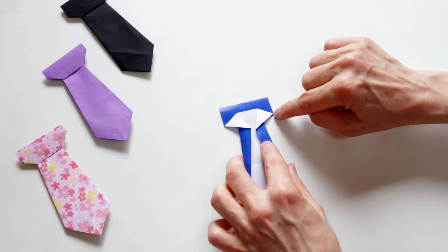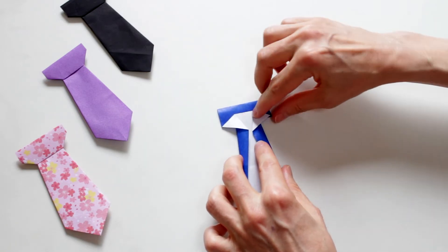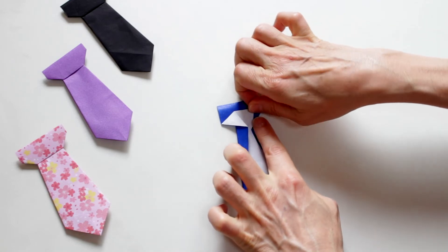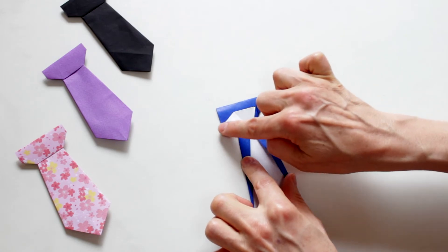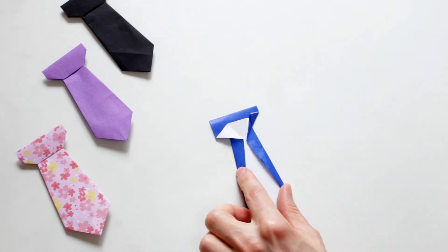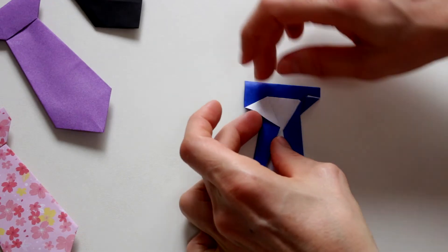Now I'm gonna fold this corner all the way to here. And do the same for the left side. And do the same for this side.